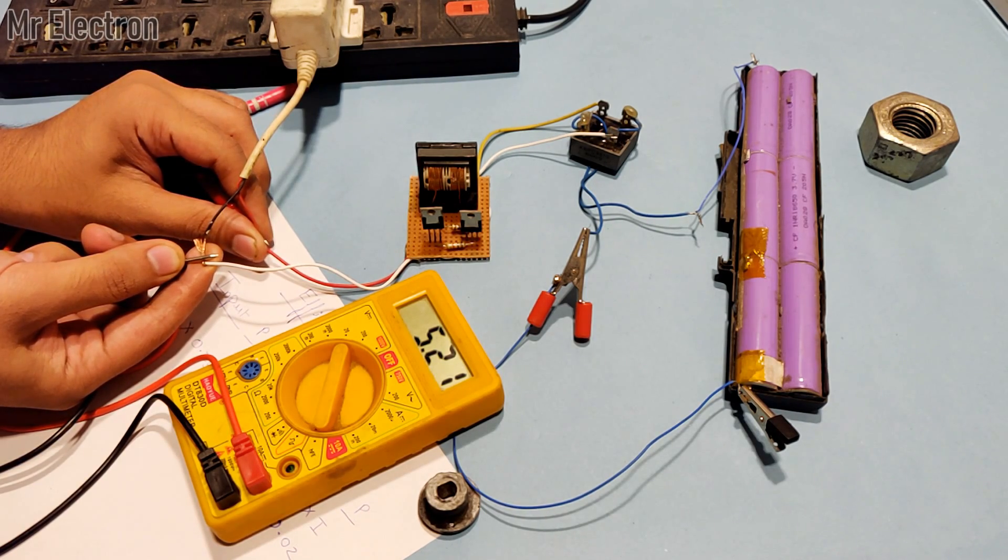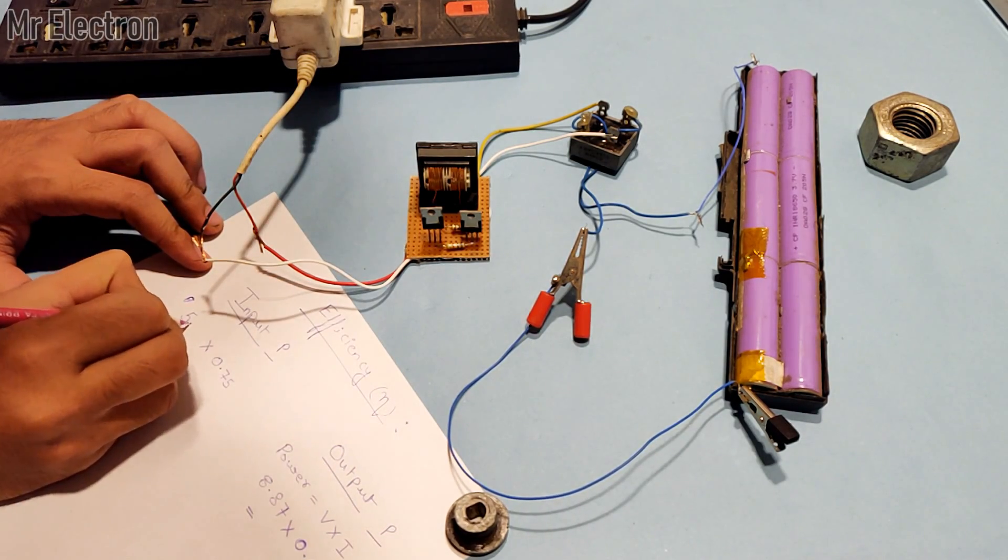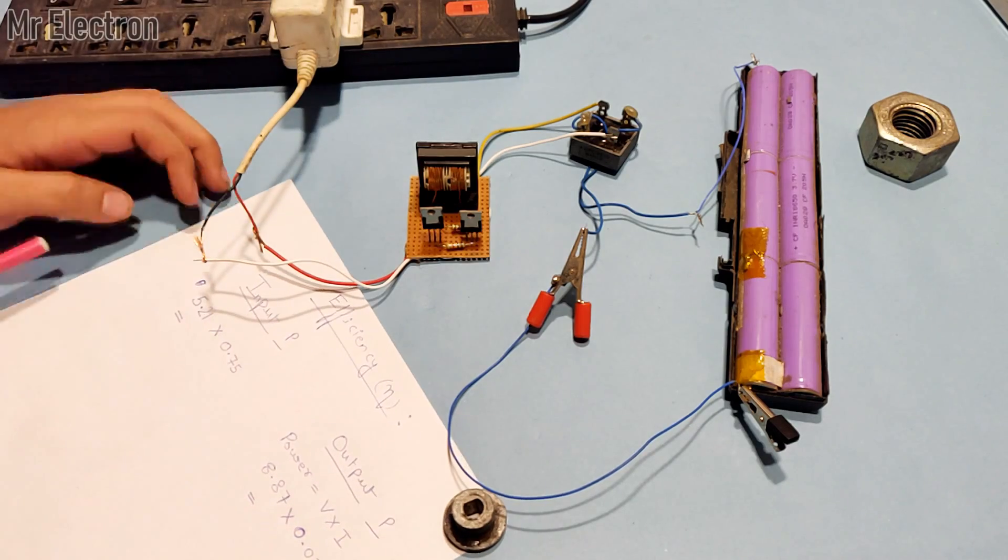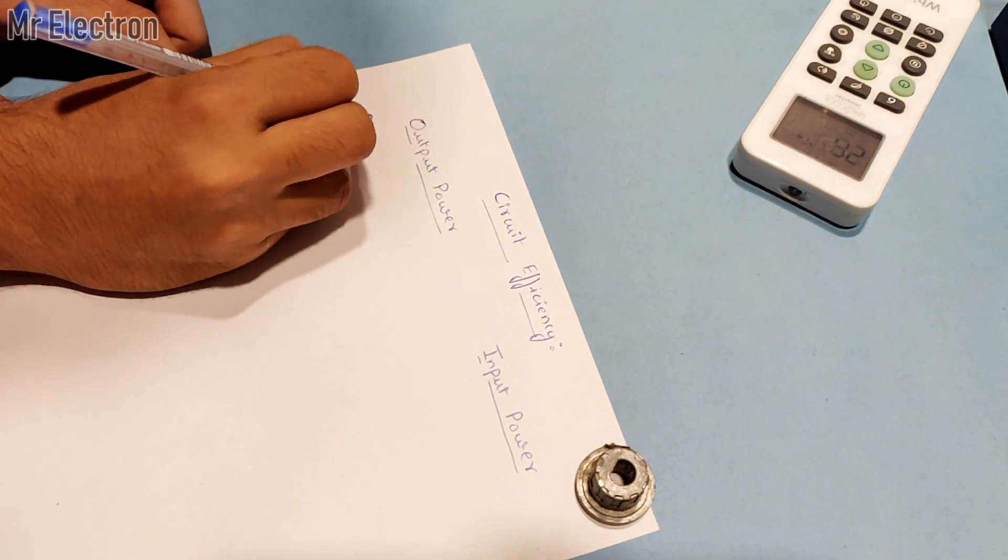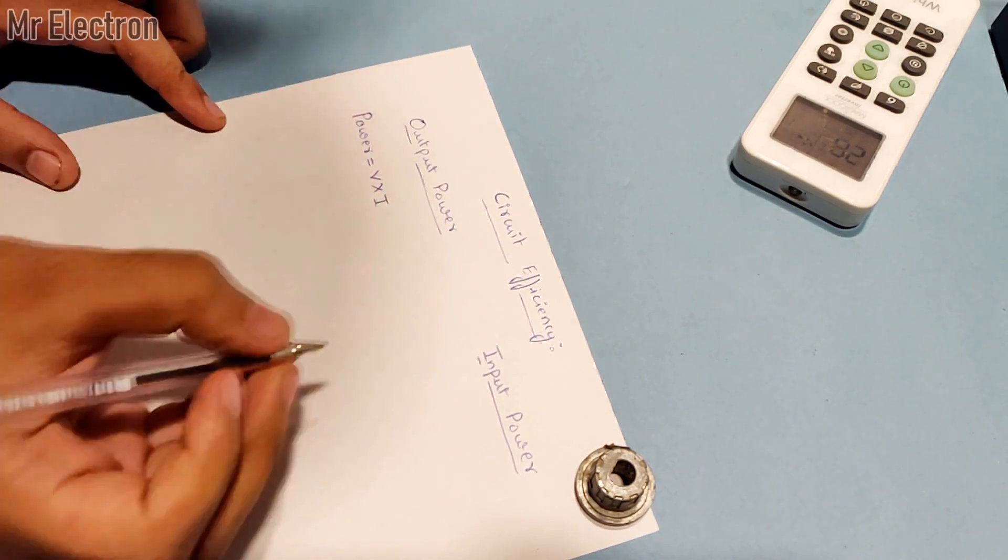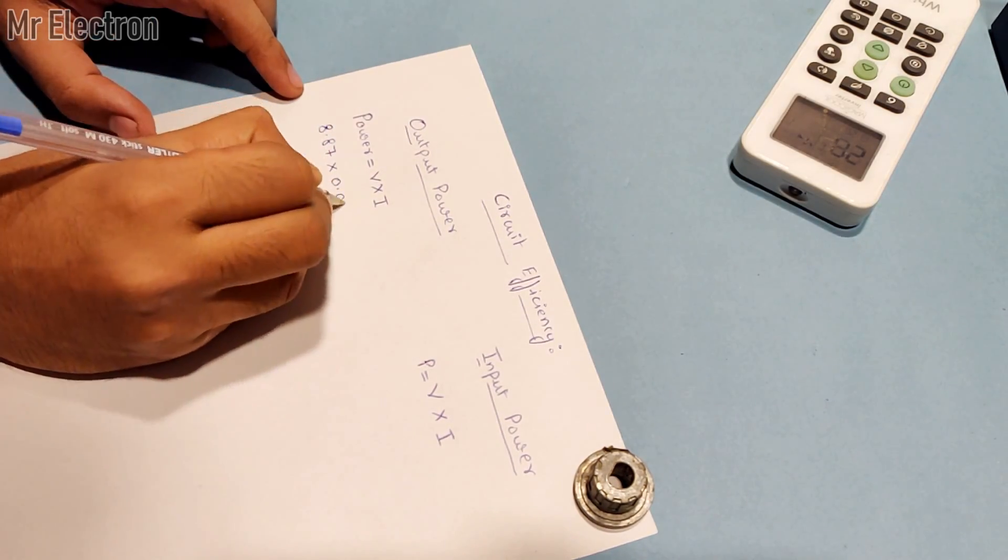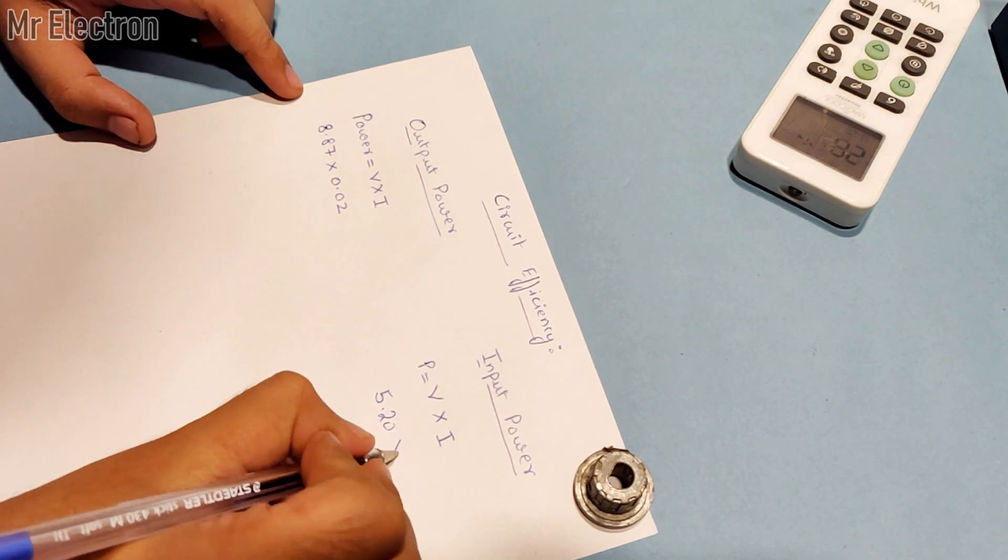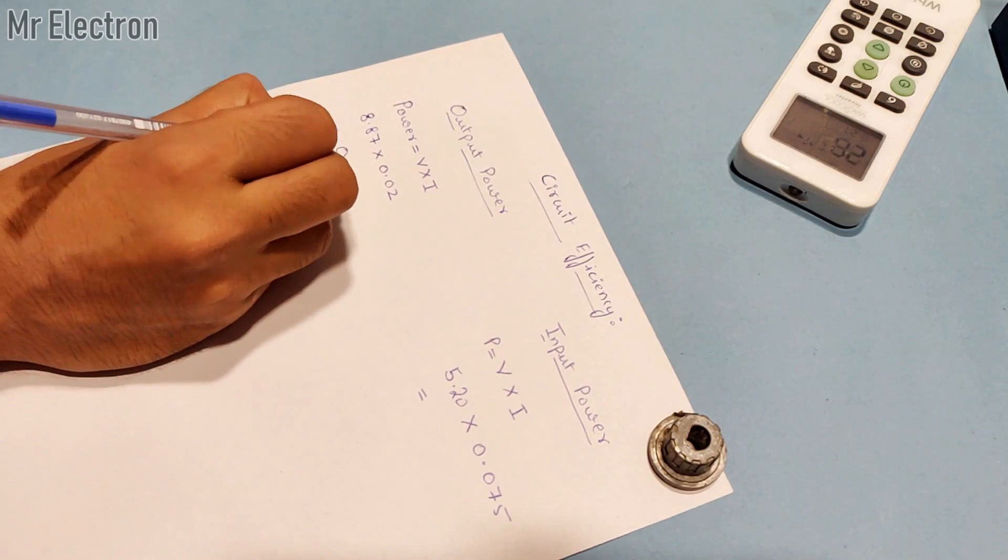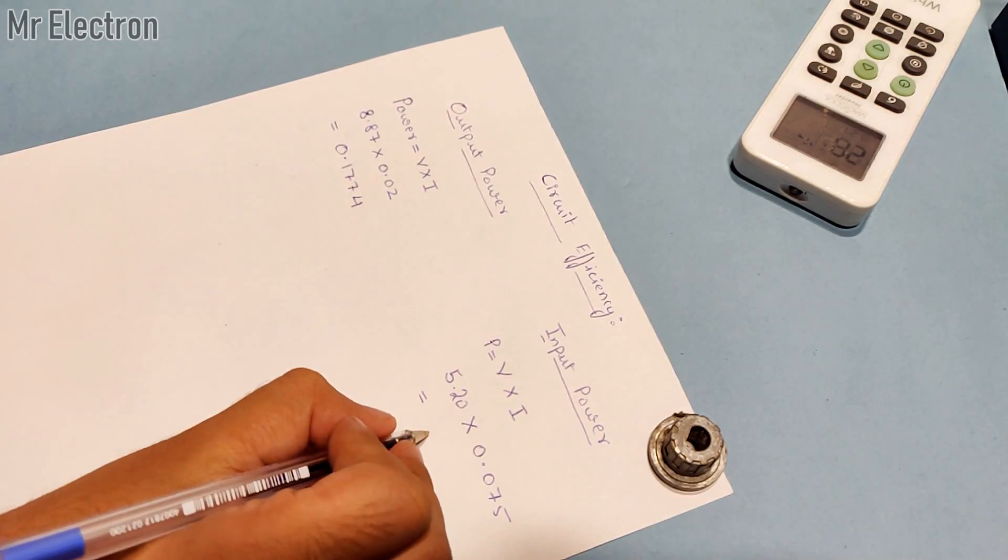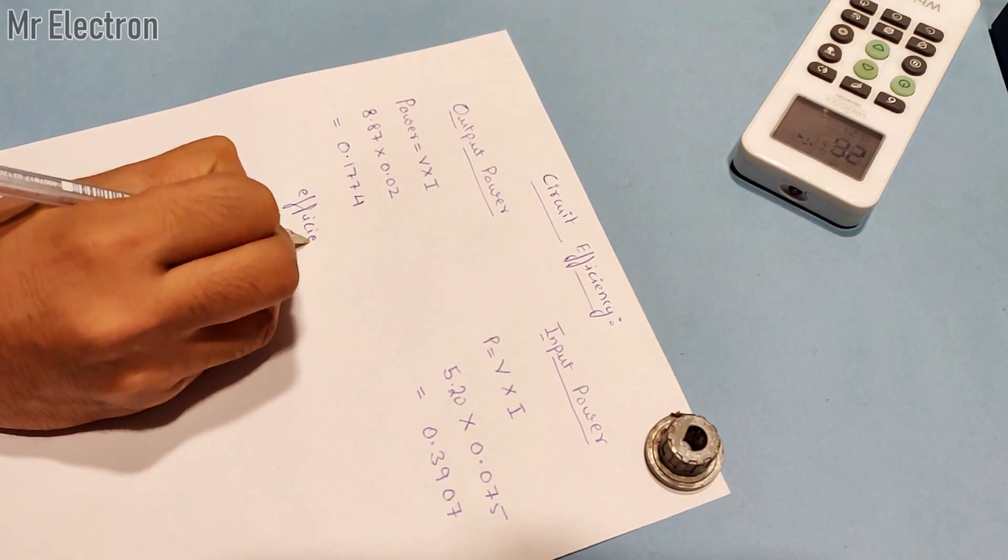So I will multiply 5.21 with 0.075. As you can see, here I have made a little mistake. I have written 0.75 and it should be 0.075, so I'm going to make that correction. Power is equal to V cross I, where V stands for volt and I stands for current. For the output side it is 8.87 times 0.02, and for the input side it is 5.20 times 0.075. The total output power is 0.1774 and the total input power is 0.3907. So efficiency eta is equal to output upon input, which will be 0.1774 divided by 0.3907 multiplied by 100.